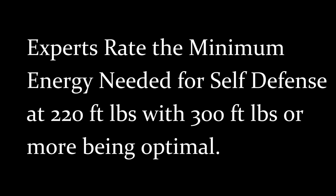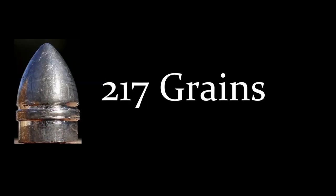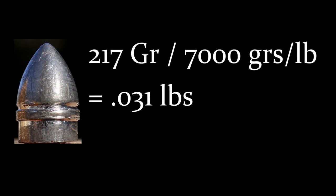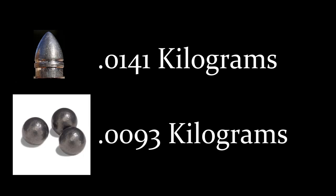Let's take a look at conicals and make a comparison. We've gone through the calculations once already, so we'll go a little bit faster this time. We've got a conical bullet at 217 grains. We're going to divide that by 7,000 grains per pound and end up with a bullet that weighs 0.031 pounds. When we take our poundage and multiply it by 0.454, we're going to end up with 0.0141 kilograms.